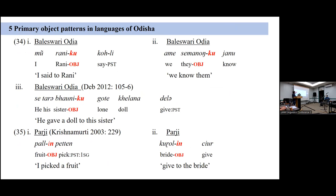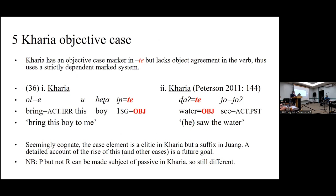The primary object pattern means the indirect object of a ditransitive and the direct object of a transitive verb are basically treated the same. This is an areally common pattern, presumably secondary in Munda derived from contact with other local languages. Karya doesn't have a differential system at all — it uses this -te, which is probably an old Austroasiatic element repurposed into this function. Everything is marked the same: pronouns, objects, and the system only has dependent marking — Karya is one of the handful of Munda languages that doesn't mark object in the verb.